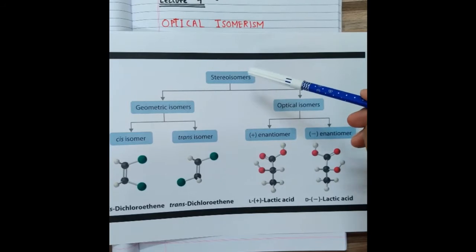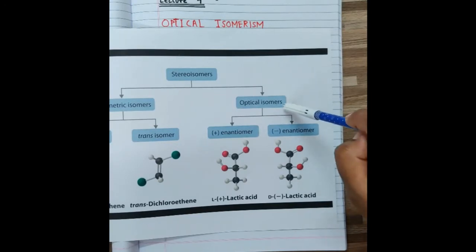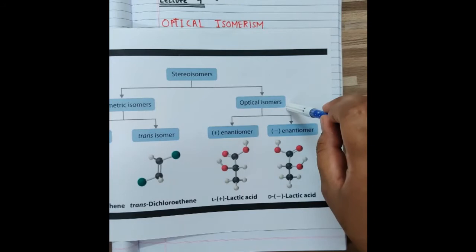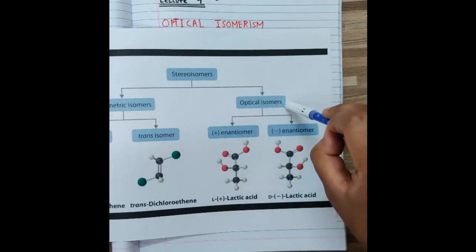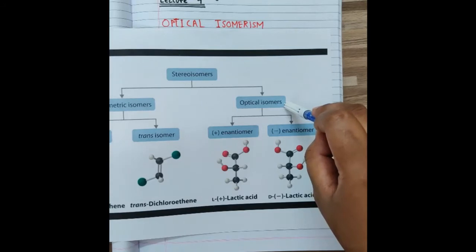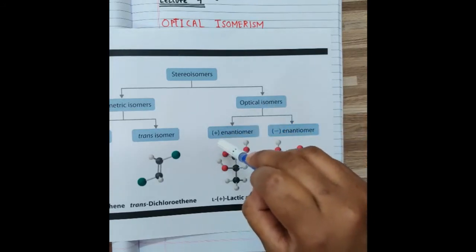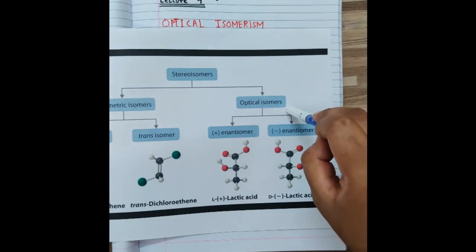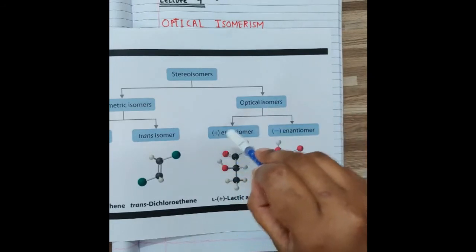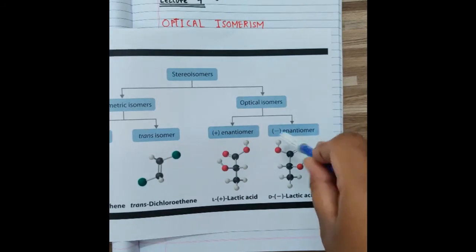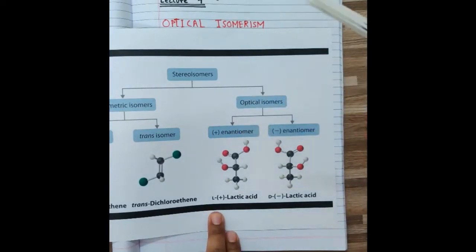Today our main focus is optical isomerism. In optical isomerism, some organic molecules show reactivity towards light. Optical means light. Optical isomers are divided into plus and minus isomers, and they always exist as a pair. One of the pair is termed the positive enantiomer and the other is negative. The pair of optical isomers are termed enantiomers.